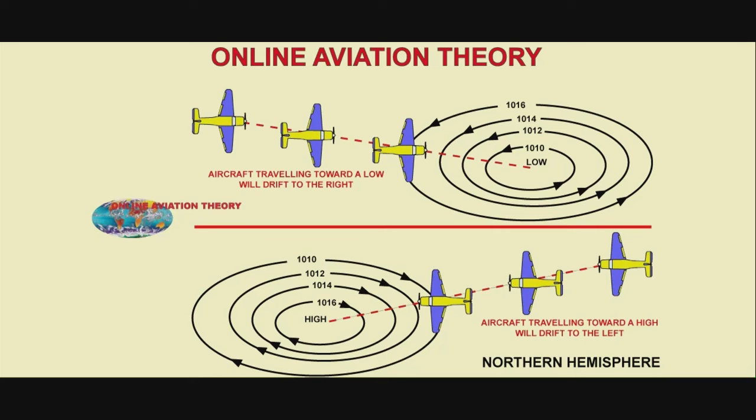When flying toward a low-pressure system, the wind will be from the left and the aircraft will drift to the right.